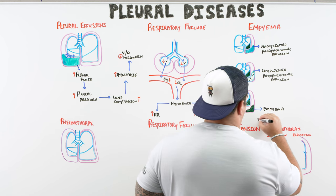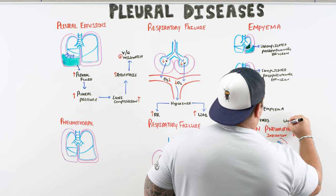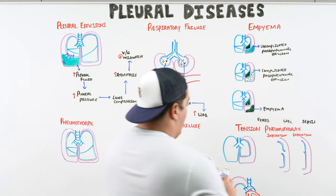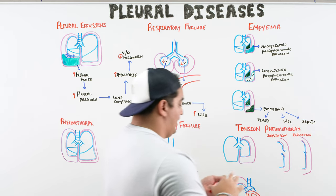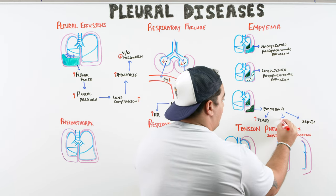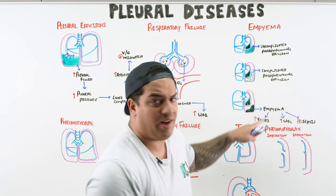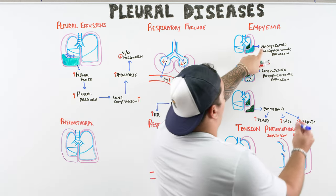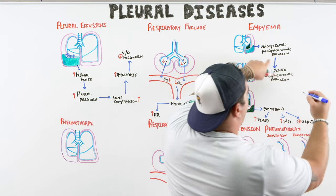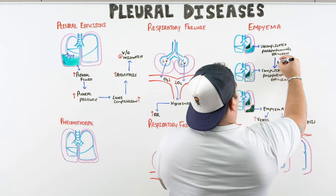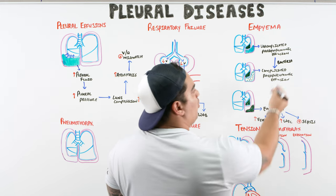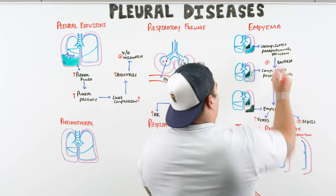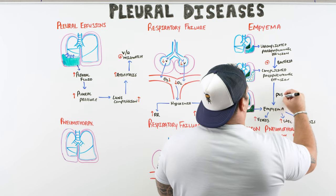Empyemas are dangerous. Look for patients with persistent high fevers, persistently elevated white blood cell count, or signs of sepsis. The bacteria in the empyema can spread into the bloodstream causing systemic infection. The progression goes: pneumonia → uncomplicated parapneumonic effusion → complicated parapneumonic effusion → empyema (frank pus with loculations).